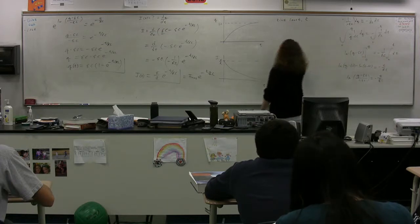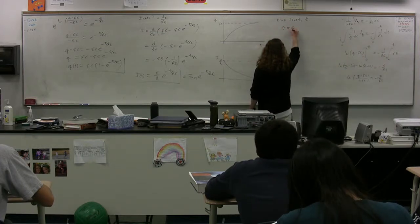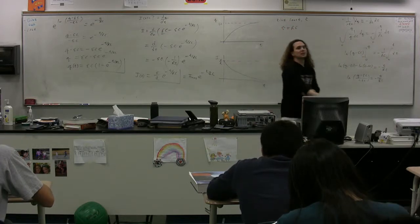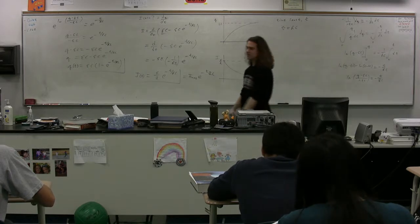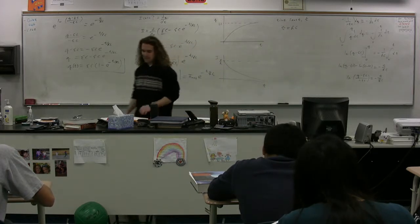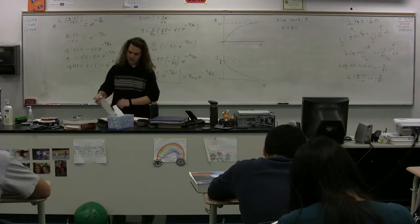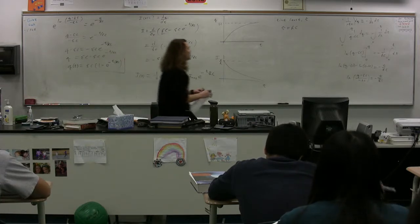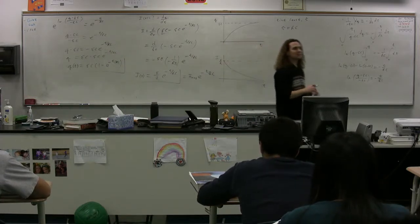The time constant for an RC circuit is R times C, the resistance times the capacitance. Let's take a moment and make sure we understand what the dimensions for the time constant are, resistance times capacitance.